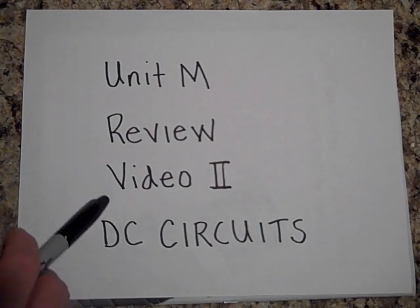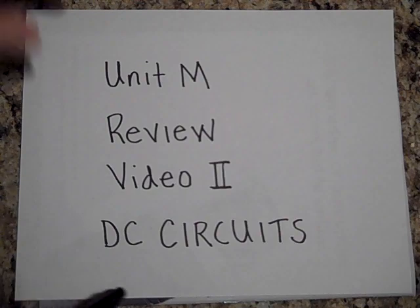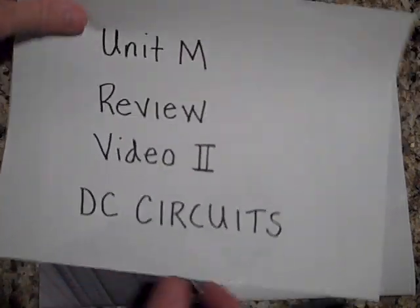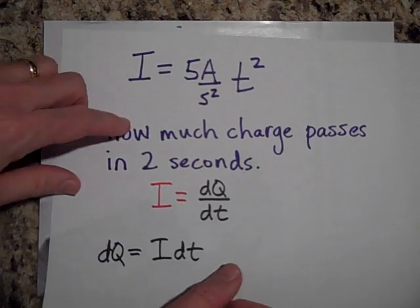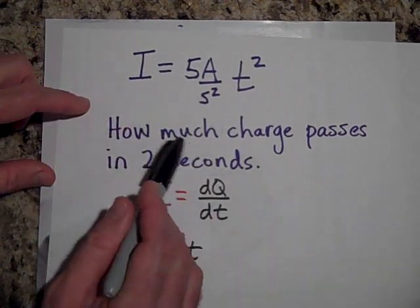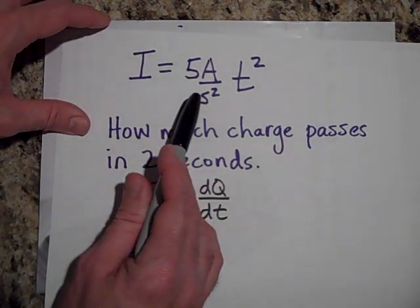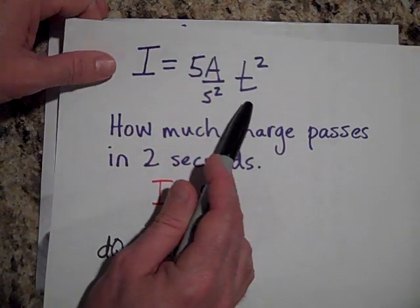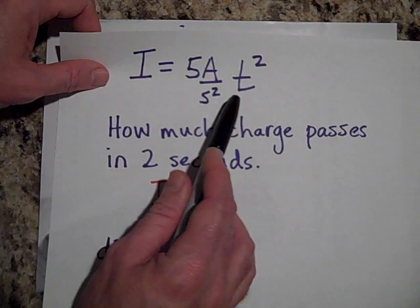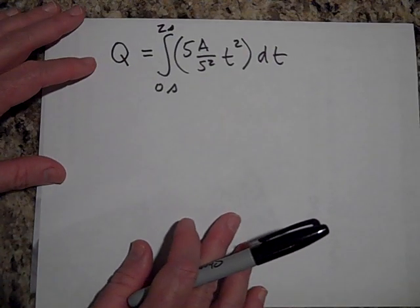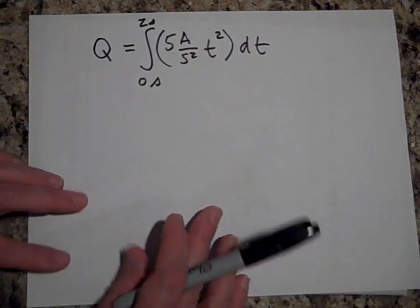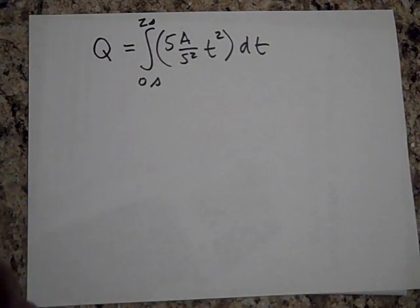Here we are with video two of Unit M's review on DC circuits. In the last video we were trying to find out how much charge passes by in the first two seconds if the current obeys this function. As time goes on the current gets greater and greater, and we want to know how much charge goes by a cross-sectional area of the wire.